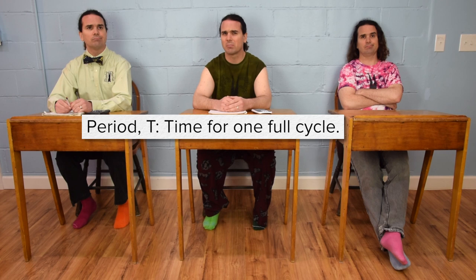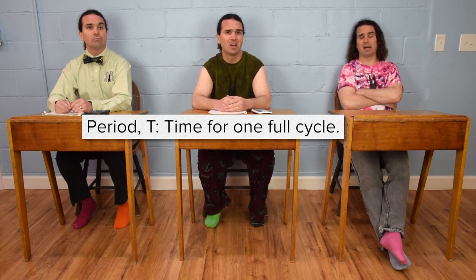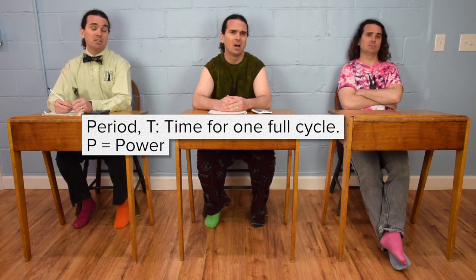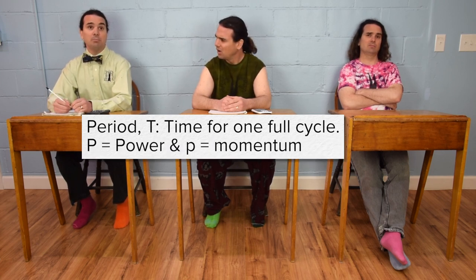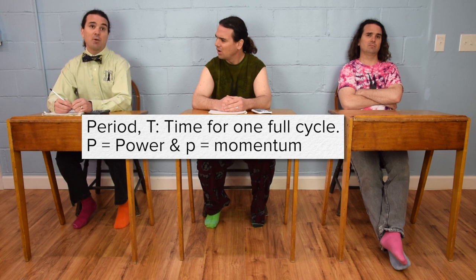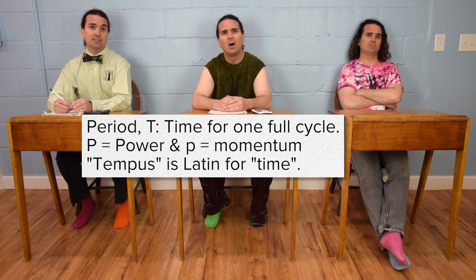Why is the symbol for period capital T? Shouldn't it be P for period? P is for power. Actually, capital P is for power. Lowercase p is for momentum. Perhaps it is because the Latin word for time is tempus. Hence, capital T.